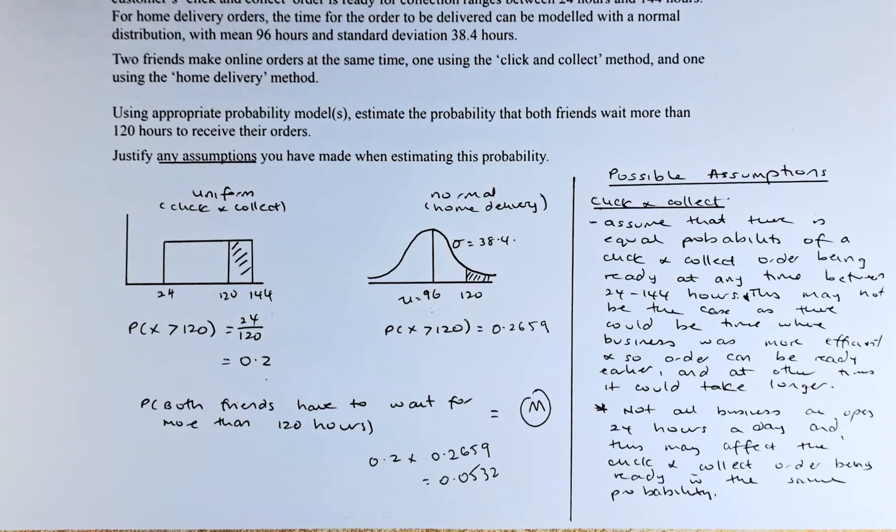We assume that there's equal probability of a click and collect order being ready at any time between 24 to 144 hours. This may not be the case. There could be times when business is more efficient and orders can be ready earlier, and times when the business is busier and orders will take longer, so it cannot be equal probability at all times.